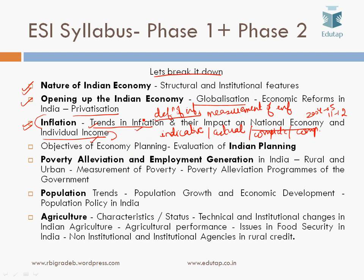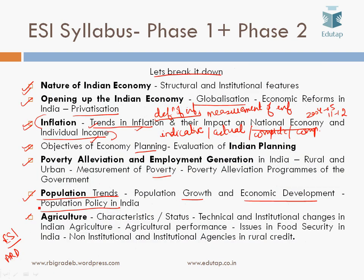The fourth topic is objectives of economic planning and evaluation of Indian planning. The fifth topic is poverty alleviation and employment generation in India, both rural and urban — covering measurement of poverty, rural and urban employment, and poverty alleviation programs of the government. The sixth topic is population trends, population growth and economic development, and the population policy in India. The next topic is agriculture, which appears in the ESI syllabus even though there is also an ARD component.